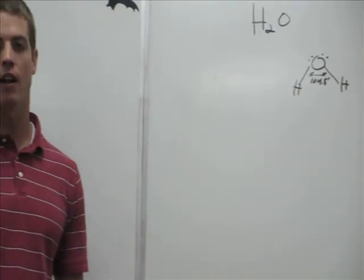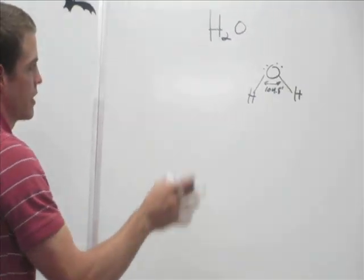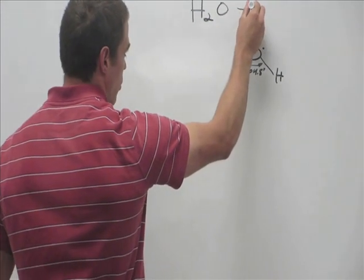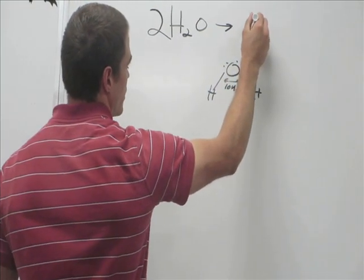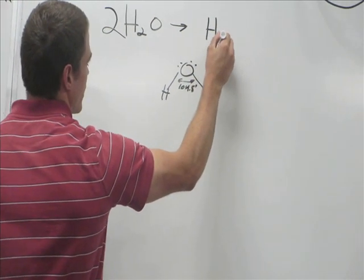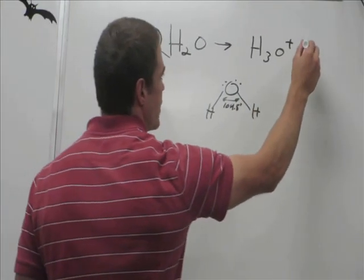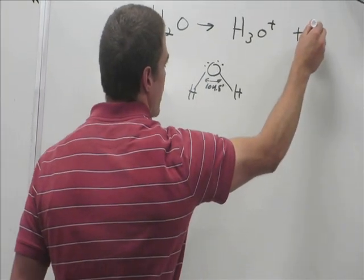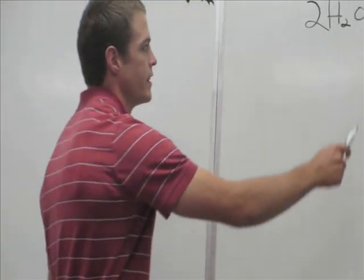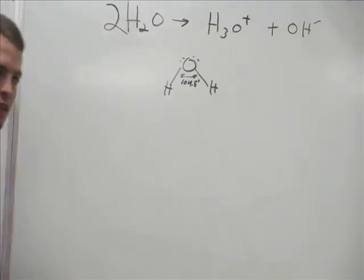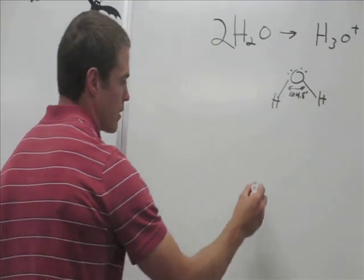I point that out because I'm going to explain what's called the self-ionization of water, or water autoprotolysis. Water exists in equilibrium — two water molecules are converted into the hydronium ion (H₃O⁺) and the hydroxide ion (OH⁻). The hydronium is the acid, and the hydroxide is the base.